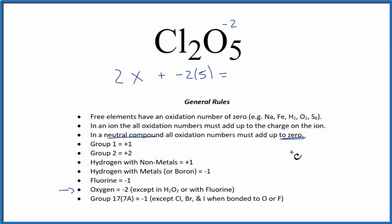And all of that needs to add up to zero, because it's a neutral compound. So we have two x minus ten, that equals zero, so x will equal a positive five.